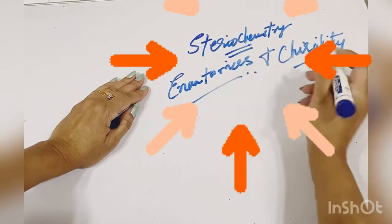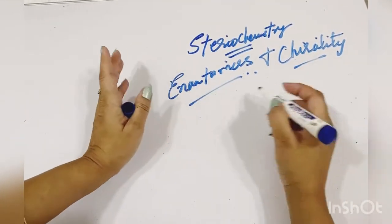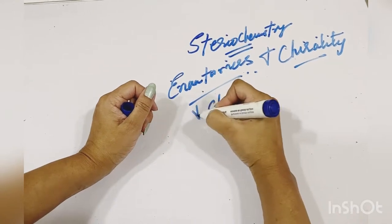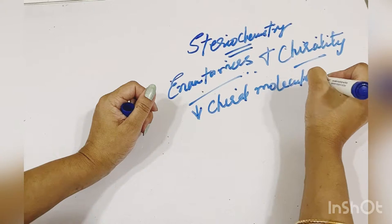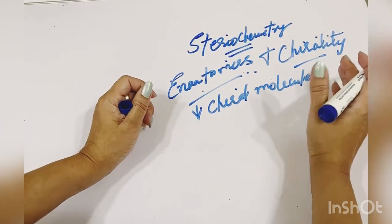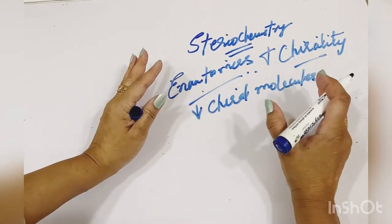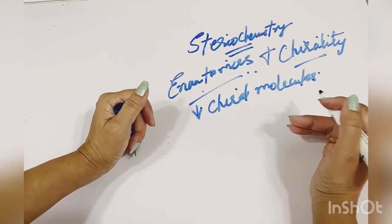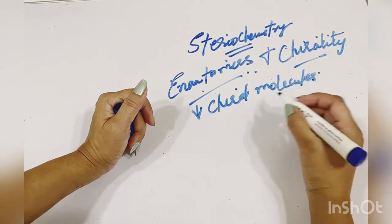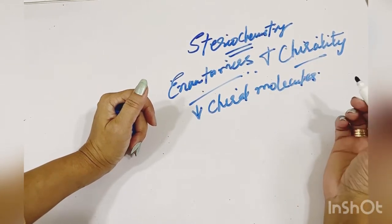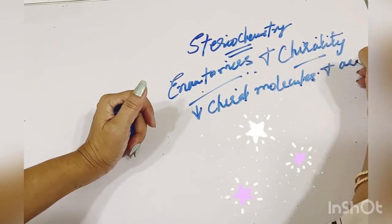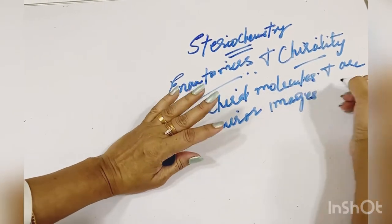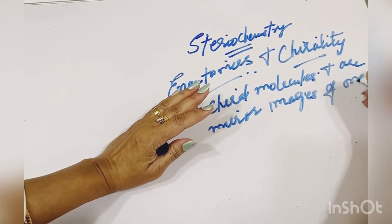So first of all, what are enantiomers? Simply, enantiomers are chiral molecules. In my previous lectures I have explained what a chiral carbon is — a carbon atom that has four different groups attached to it, called a chiral carbon, stereogenic center, or chiral center. Enantiomers are chiral molecules and are mirror images of one another.